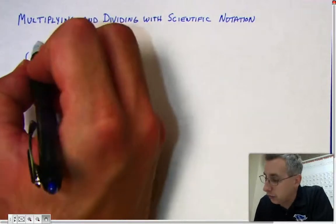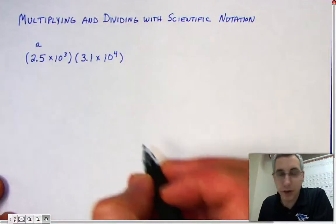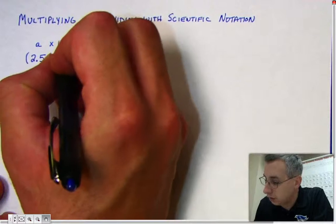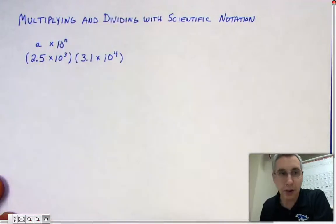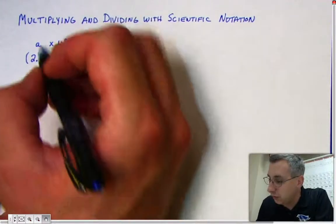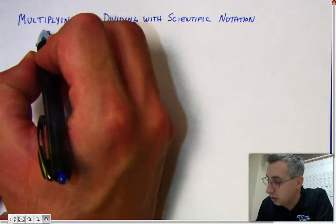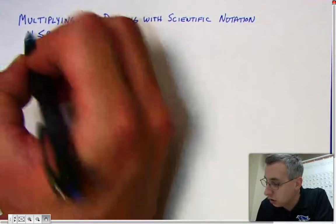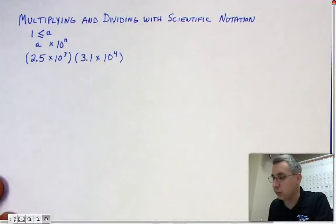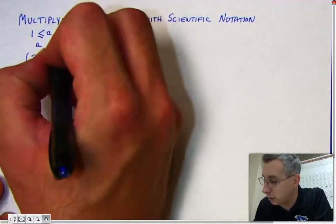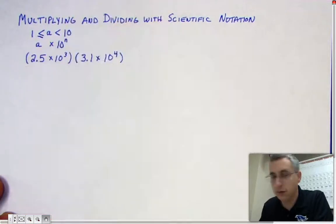Sometimes it's written like this: a times 10 to the n power. That's the pattern. The a can be 1 or more than 1, but it must be less than 10.